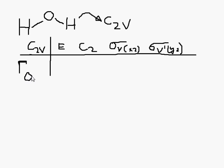So let's just look at the OH bond. There's two of them, one here, one here. So for E that's a 2. And for the C2, remember for this we're going to go down the middle here. So they would both rotate. So you're going to get a zero there.